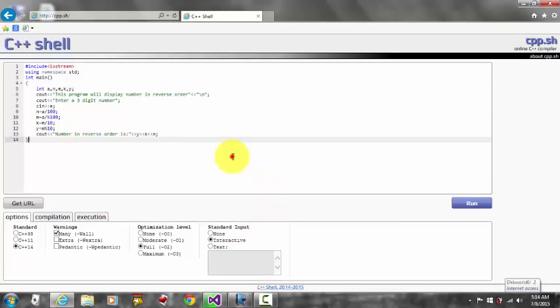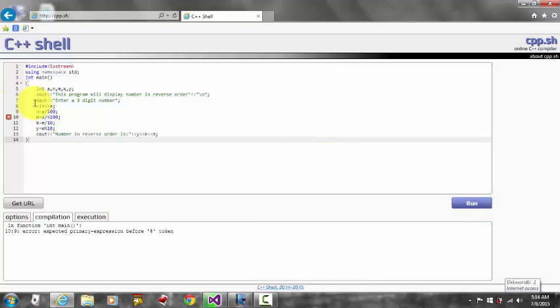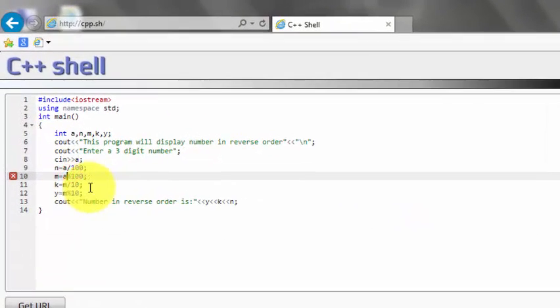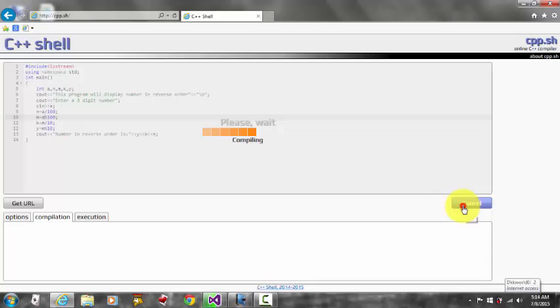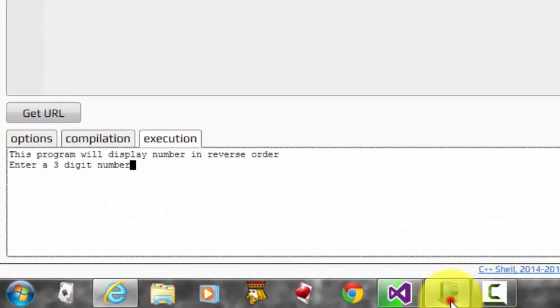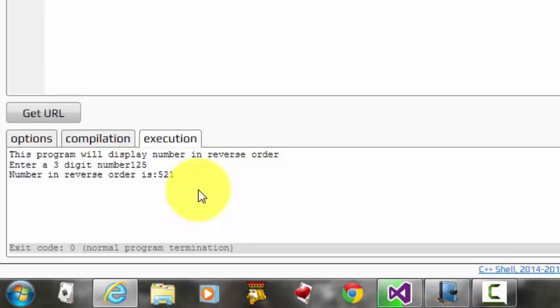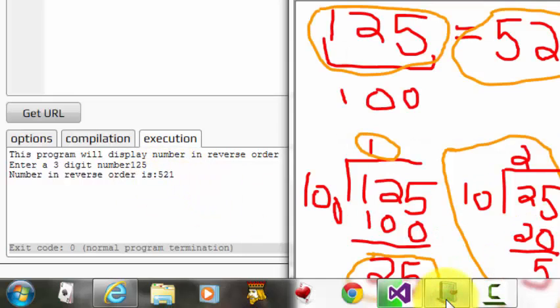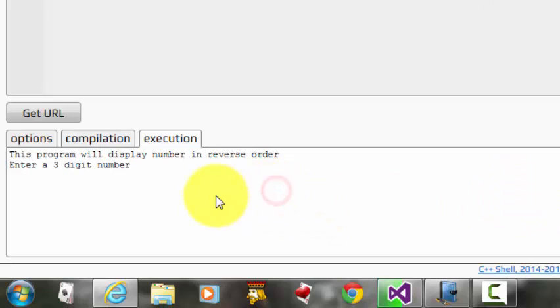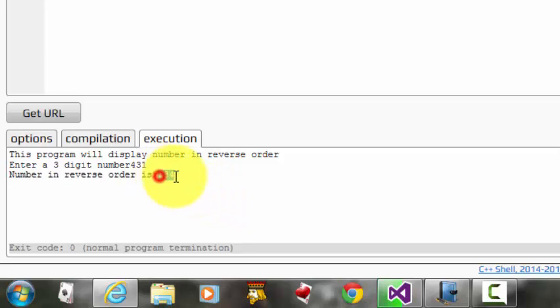Okay guys, so let's run this program. You know that it's 125, let's try 125. 521, as you can see. So let's try another number: 431. 134.